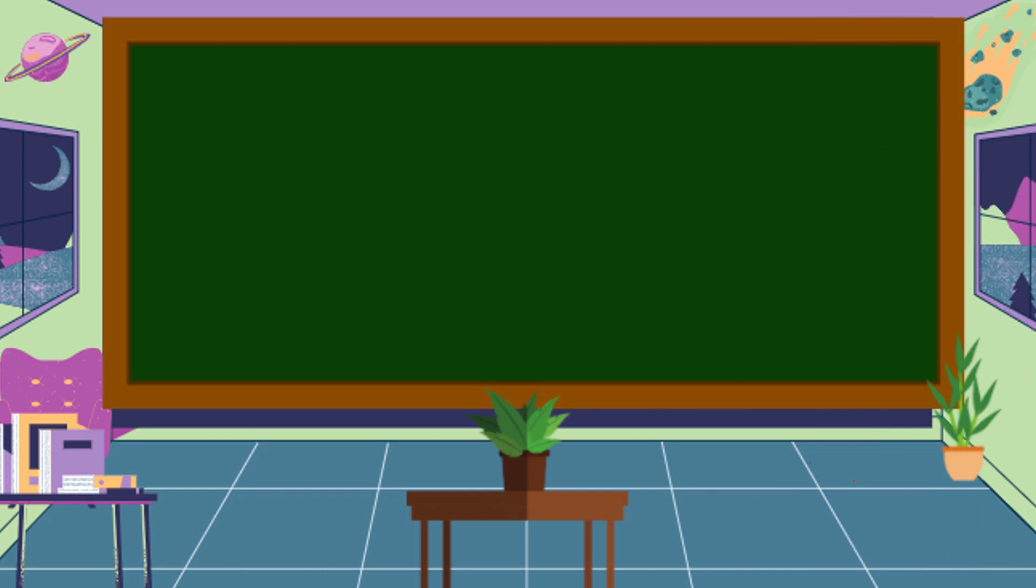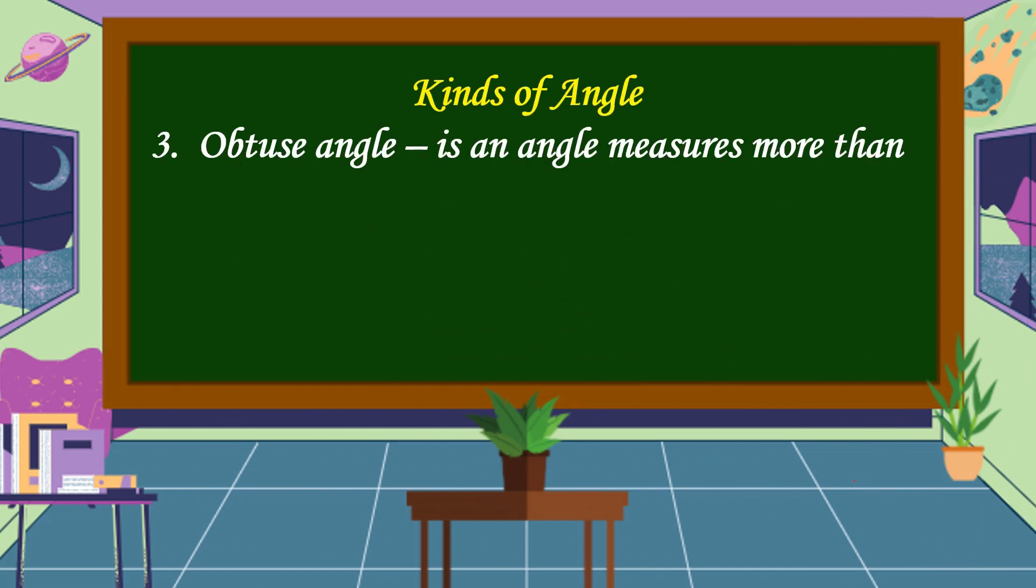The last kind of angle that we're going to study is an obtuse angle. An obtuse angle is an angle measures more than 90 degrees but less than 180 degrees.